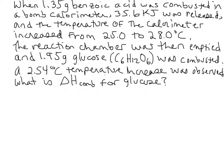There are a couple of equations we want to bring to mind here. We can get the heat from a bomb calorimetry experiment if we have the heat capacity of the bomb calorimeter and the observed temperature increase. The equation is: heat is equal to capital C — the heat capacity of the calorimeter — times delta T.